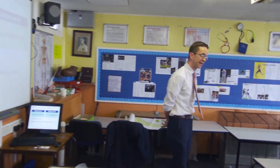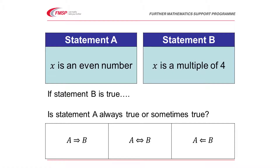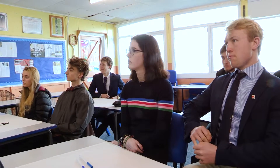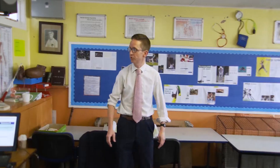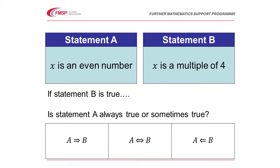The teacher begins the lesson by looking at some examples. On the board there are two statements: statement A is 'x is an even number' and statement B is 'x is a multiple of four.' Students are given about 30 seconds to think, then check with the person next to them. The teacher explains they started with two statements for students to think about.